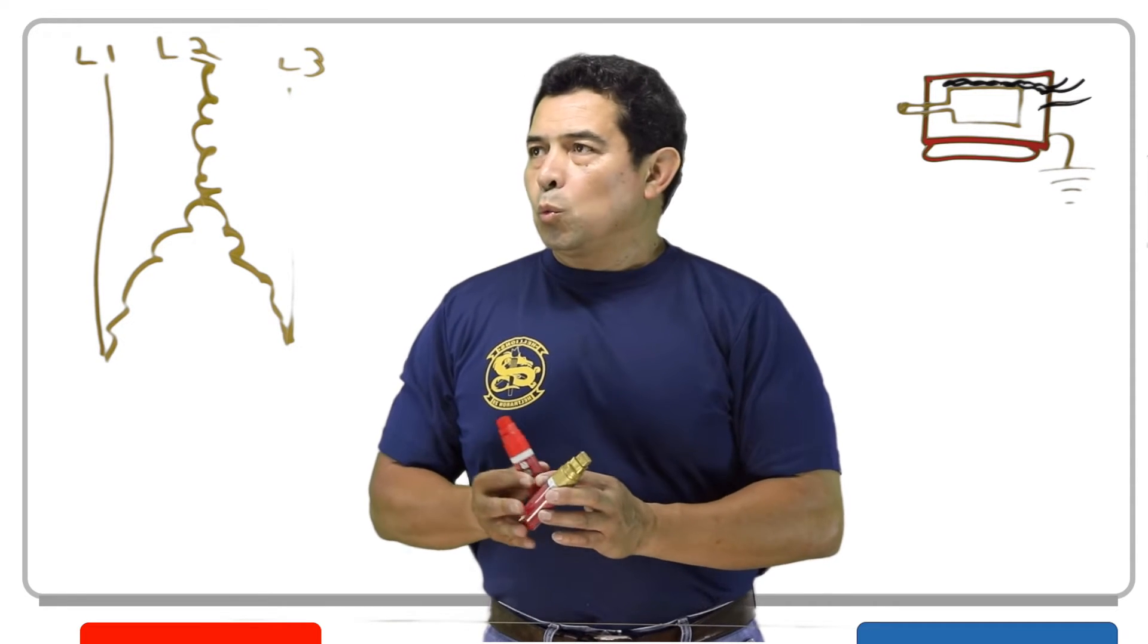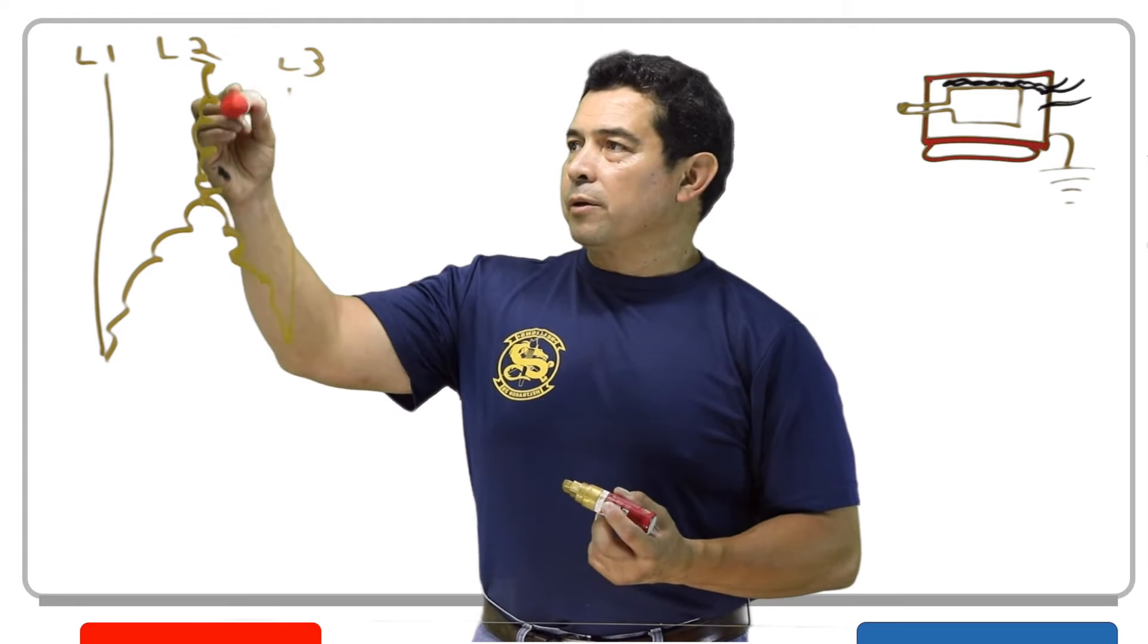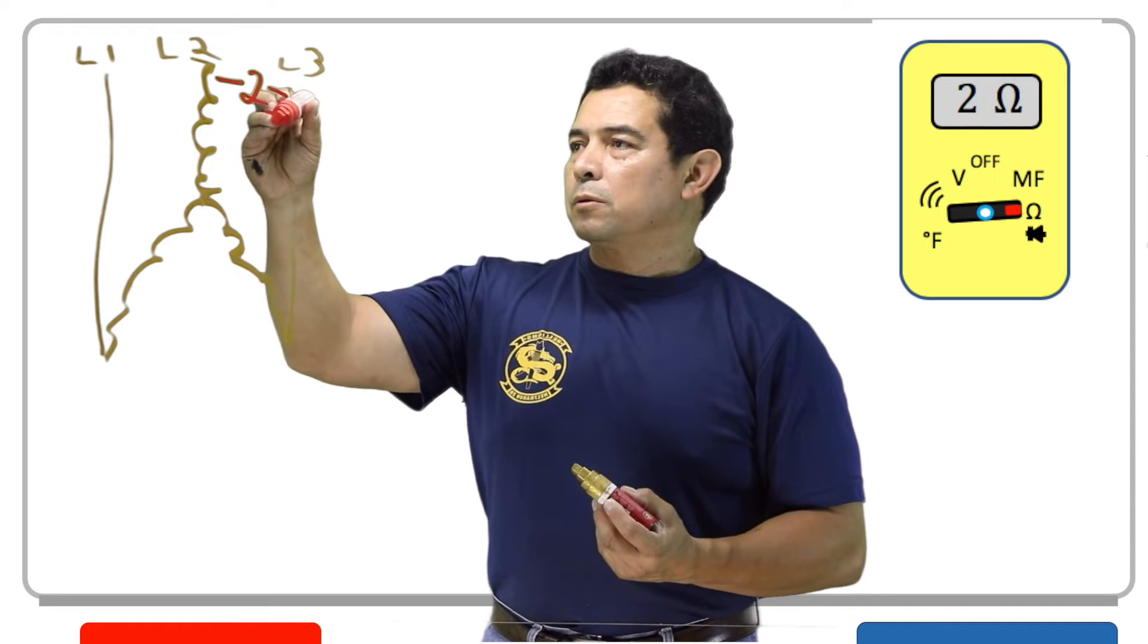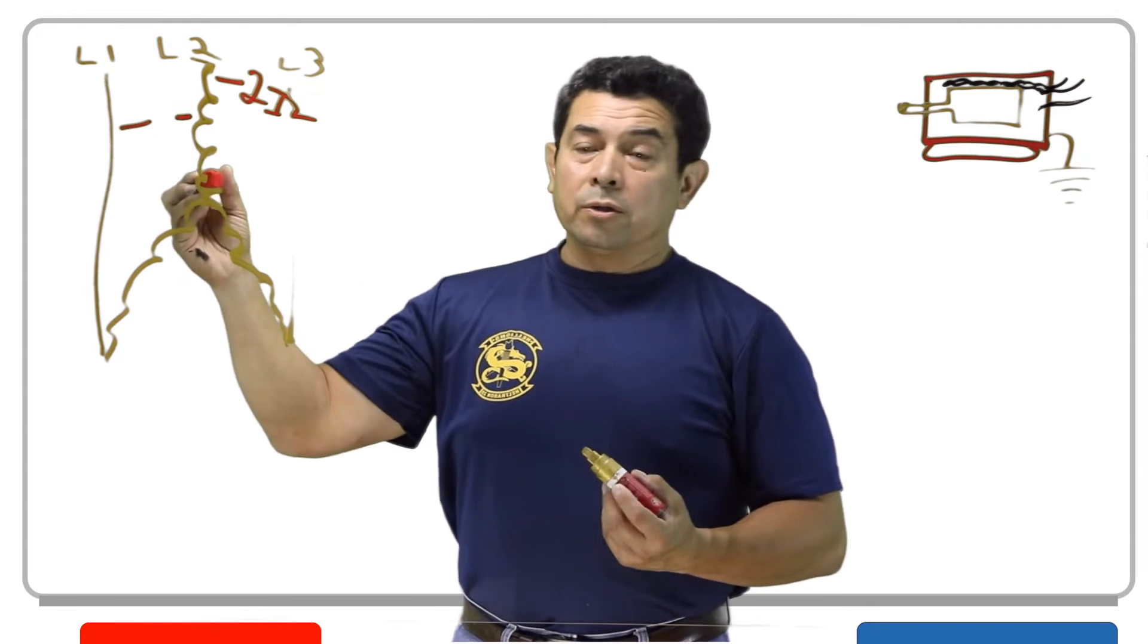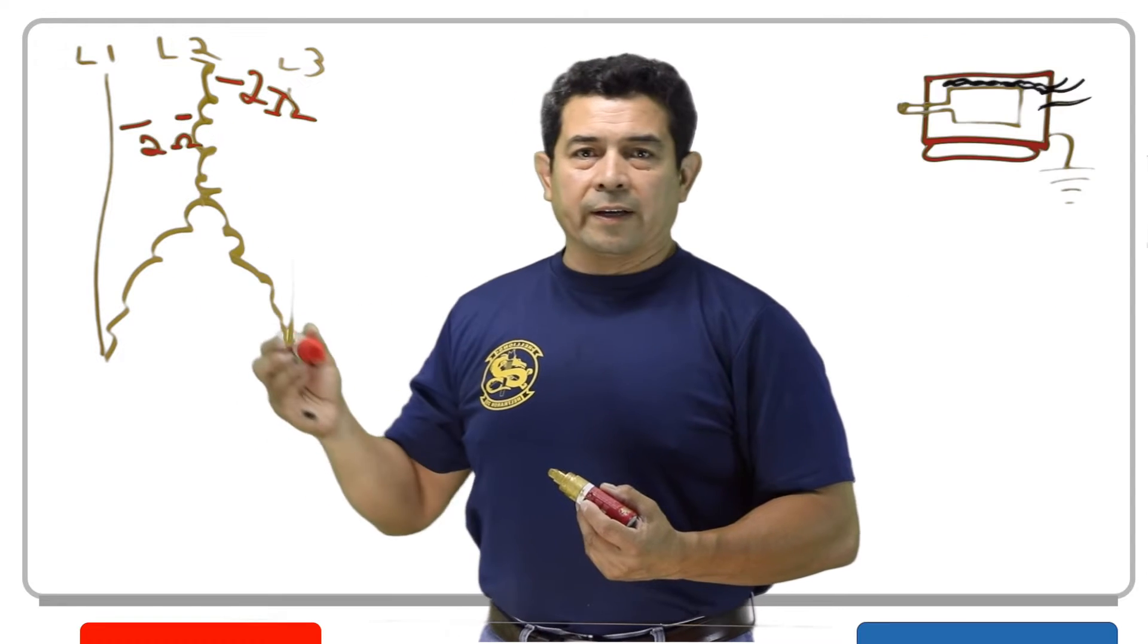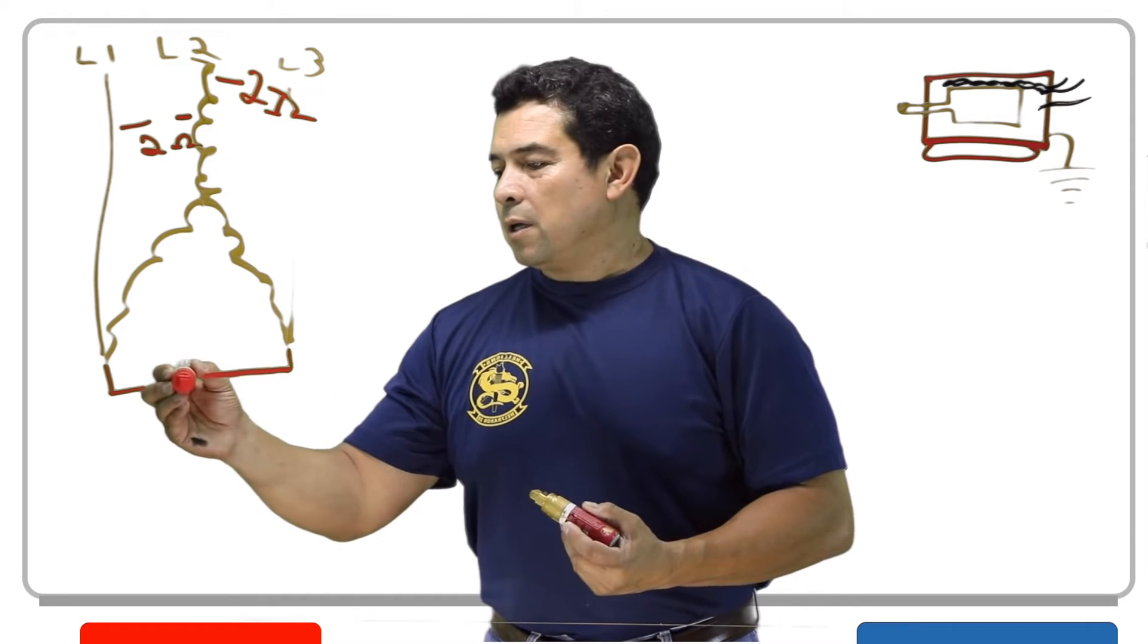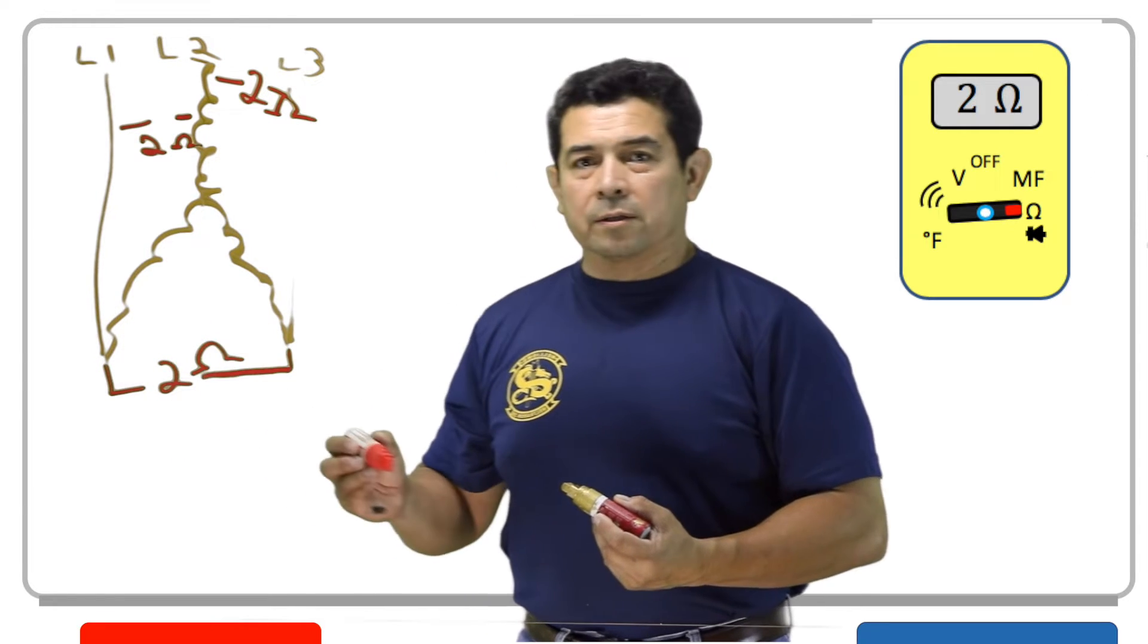So let's say that if we were to troubleshoot this motor, we're going to check from here to here to here, and let's say that we get two ohms, two ohms there. So that means that from here to here, we should also get the same two ohms like that. That also tells me that between this one here and this one here, I should get the same two ohms like this.